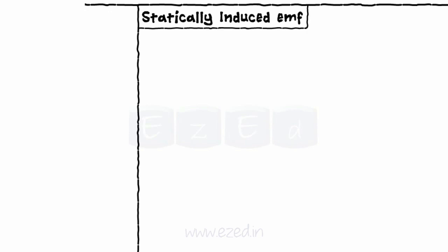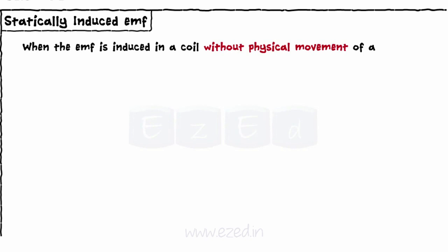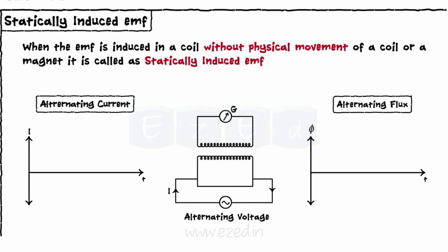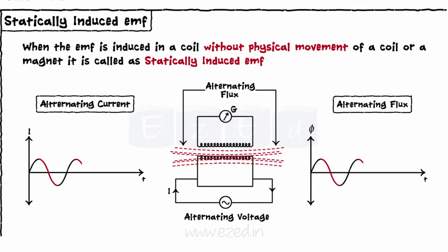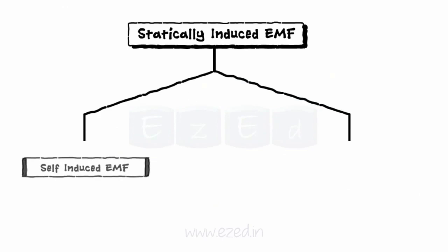When the EMF is induced in a coil without physical movement of a coil or a magnet, it is called as statically induced EMF. To induce an EMF in the circuit, there must be a change in the flux associated with the coil, which can be achieved by increasing and decreasing the current with time without any physical movement. The statically induced EMF is further divided into self induced EMF and mutually induced EMF.